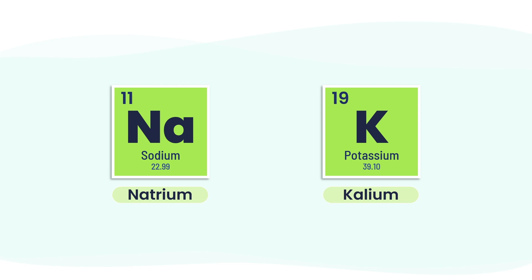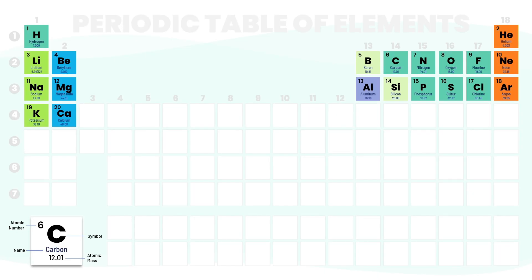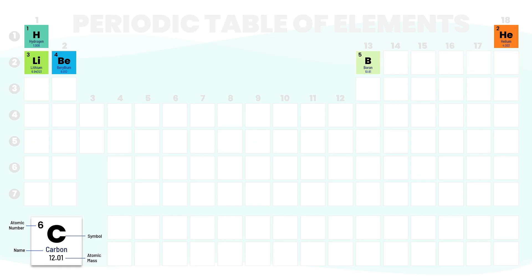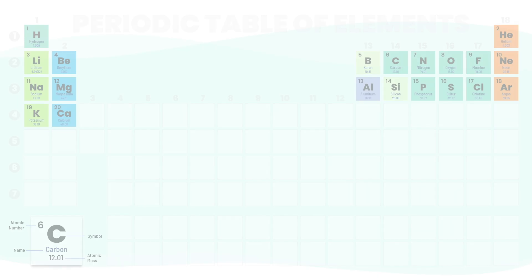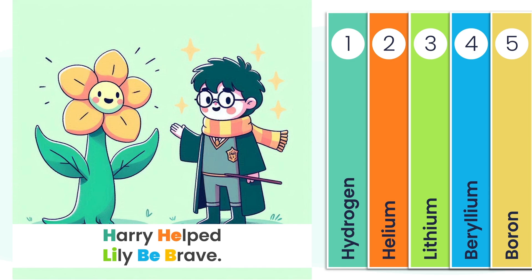So where do we start? With the first 20 elements of the periodic table. Why these 20? Because they're the building blocks of life, materials, and so many reactions you'll come across in chemistry and beyond. To make them easier to learn, we'll break them into 4 manageable sets, and for each set you'll get a clever memory trick to help it stick. To help you remember the first 5 elements, picture this simple scene: Harry helped Lily be brave. Each bold letter stands for an element — H for hydrogen, He for helium, Li for lithium, Be for beryllium, and B for boron.